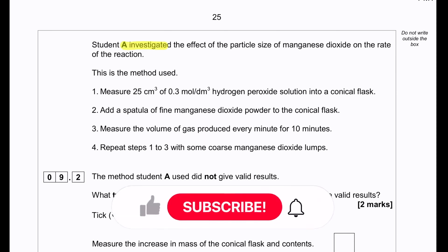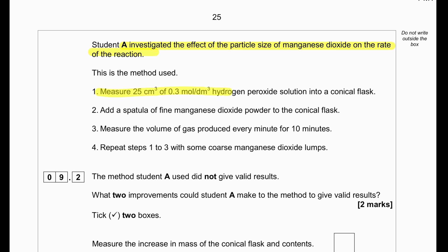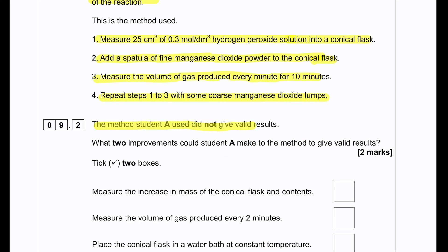Student A investigated the effect of particle size of manganese dioxide on the rate of the reaction. The method used: measure 25 cm³ of 0.3 mol per dm³ hydrogen peroxide solution into a conical flask, add a spatula of fine manganese dioxide powder to the conical flask, measure the volume of gas produced every minute for 10 minutes, repeat steps 1 to 3 with coarse manganese dioxide lumps. The method student A used did not give valid results.